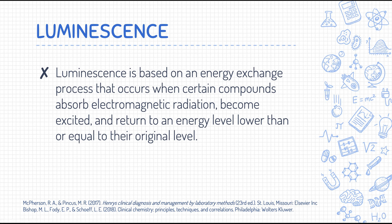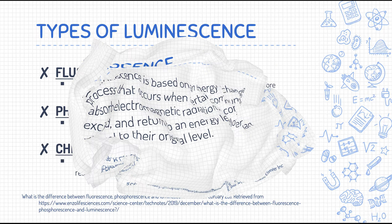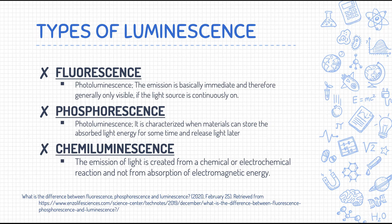When we talk about luminescence, there are three types that are very important for us to know. The first is fluorescence, which is the main topic we will be discussing in fluorometry. Aside from that, we have phosphorescence, and we also have chemiluminescence. For the first two — fluorescence and phosphorescence — both are aided by the principle of photoluminescence.